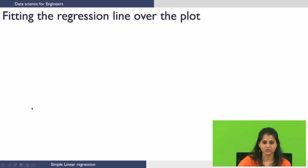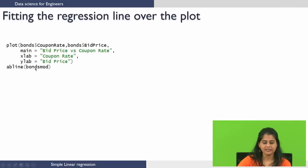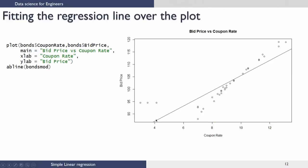Now let us see how to fit the regression line over the plot. We use the function abline() with bonds.mod as the input. In abline, 'a' and 'b' refer to the intercept and slope respectively — so if the equation is y = a + bx, then a is β̂₀ and b is β̂₁. Looking at the plot on the right, we can now see how the regression line fits. It fits pretty badly and does not identify the outliers, so we can say that the regression line is being affected by these outliers.